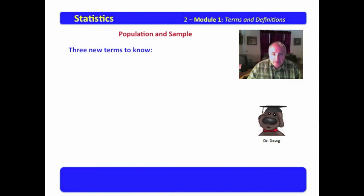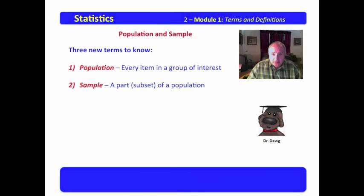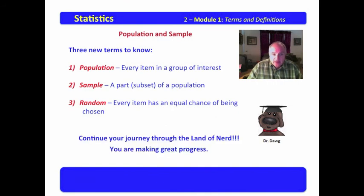There are three new terms you should know. These are the things that you should get from this little discussion. Population: Every item in a group of interest. Sample: A part or subset of a population. Random: Every item has an equal chance of being chosen.